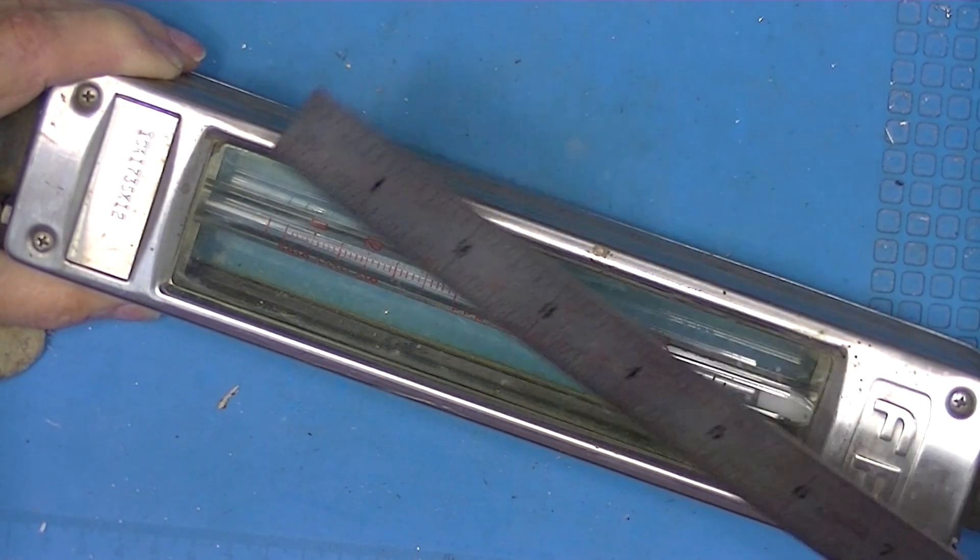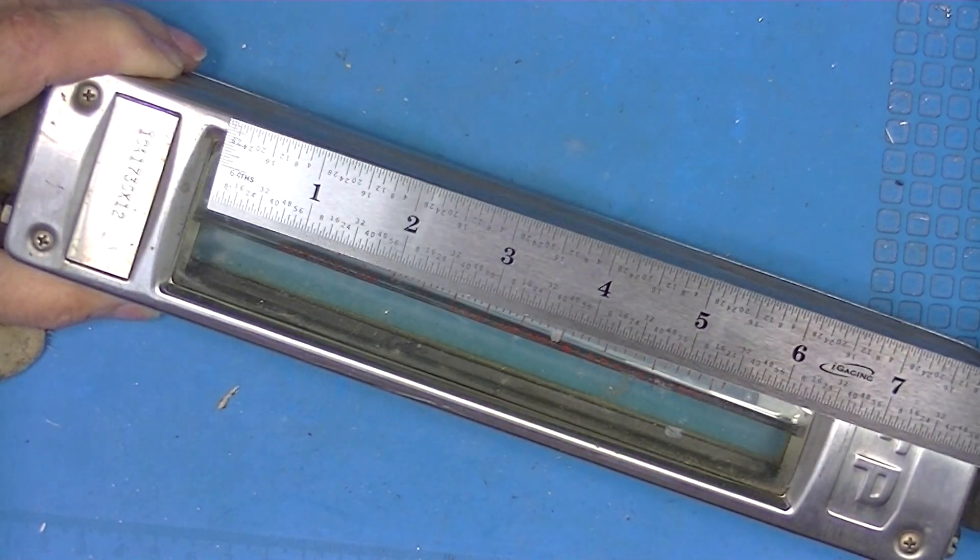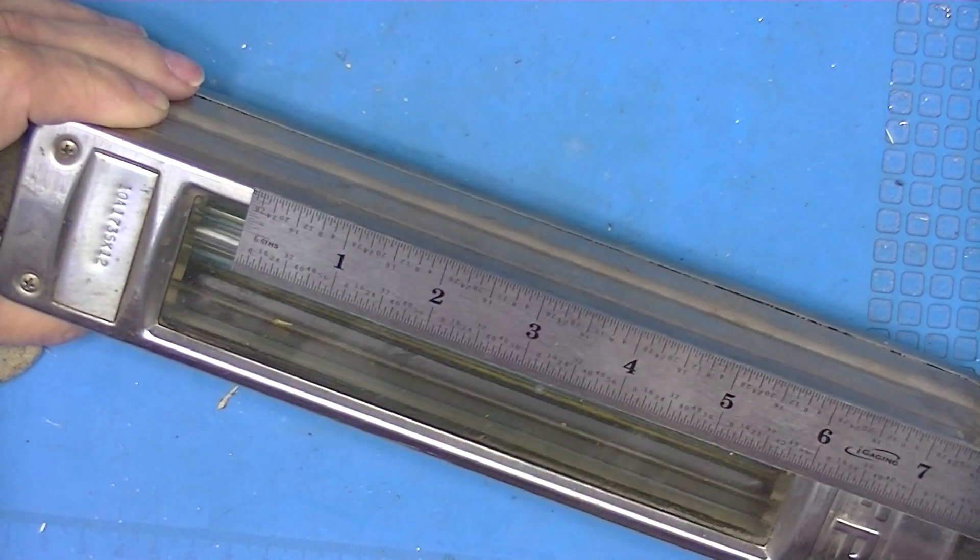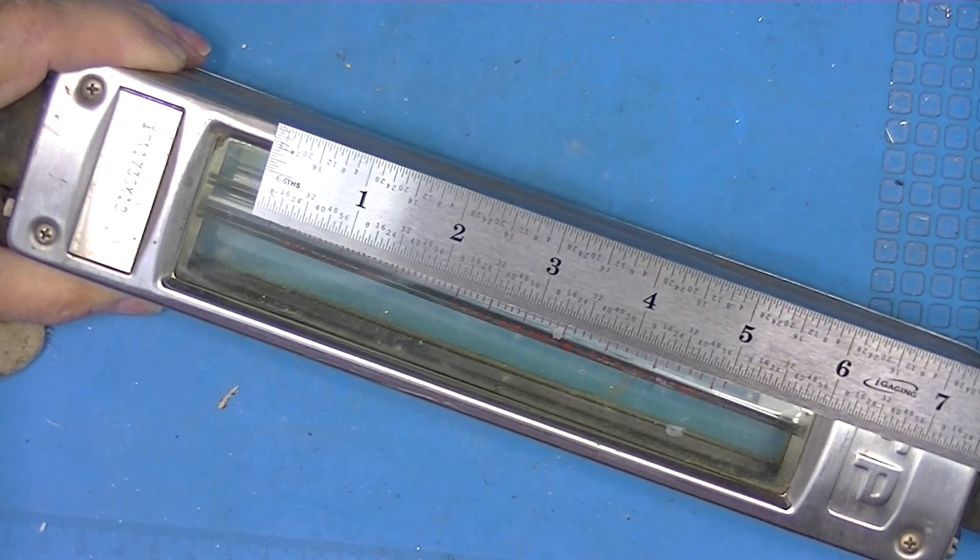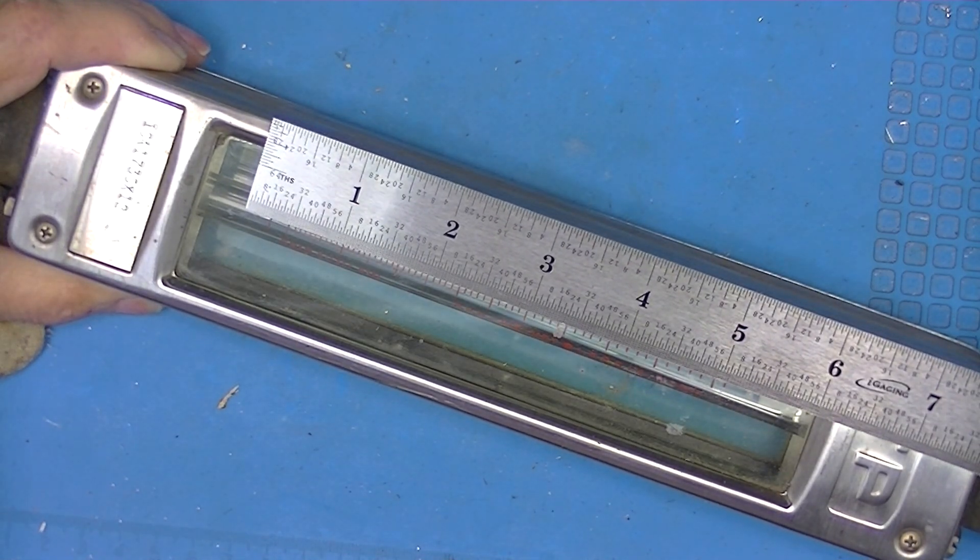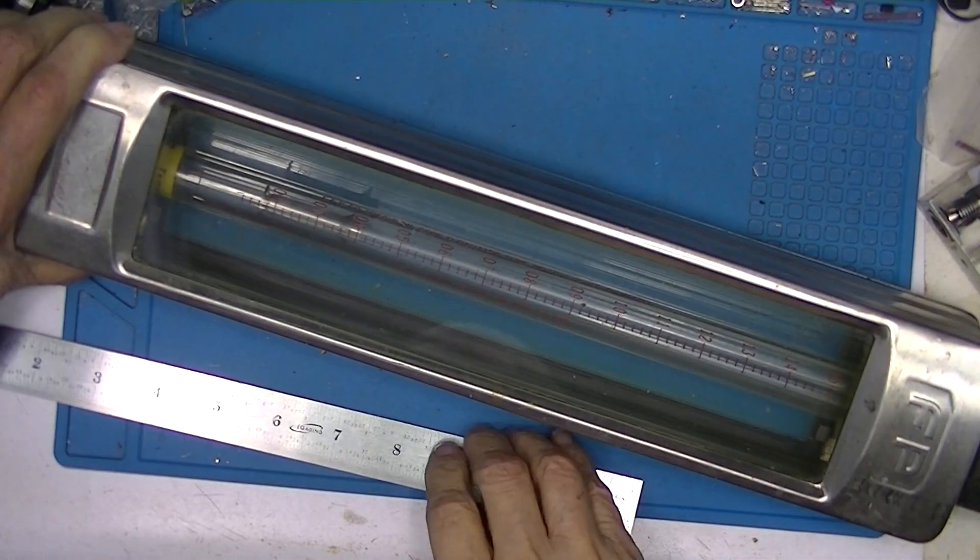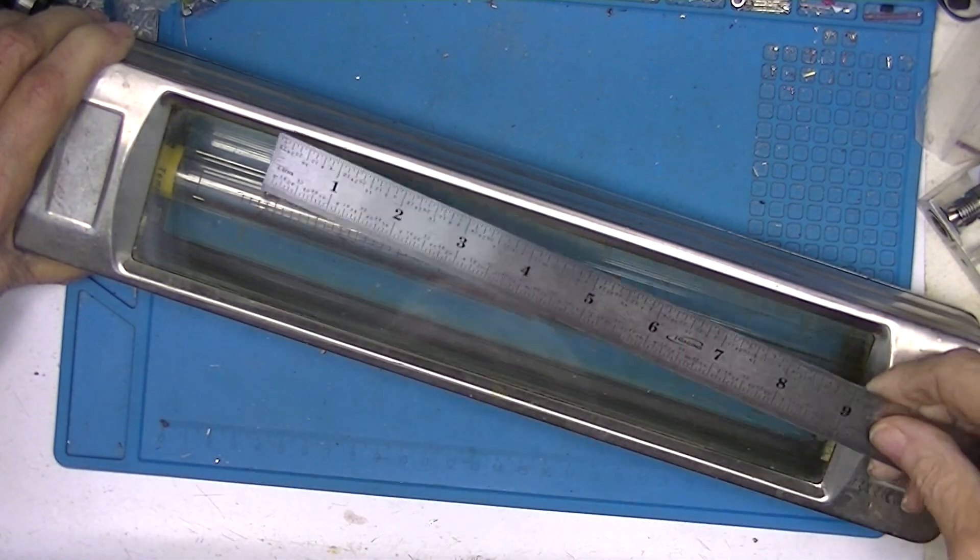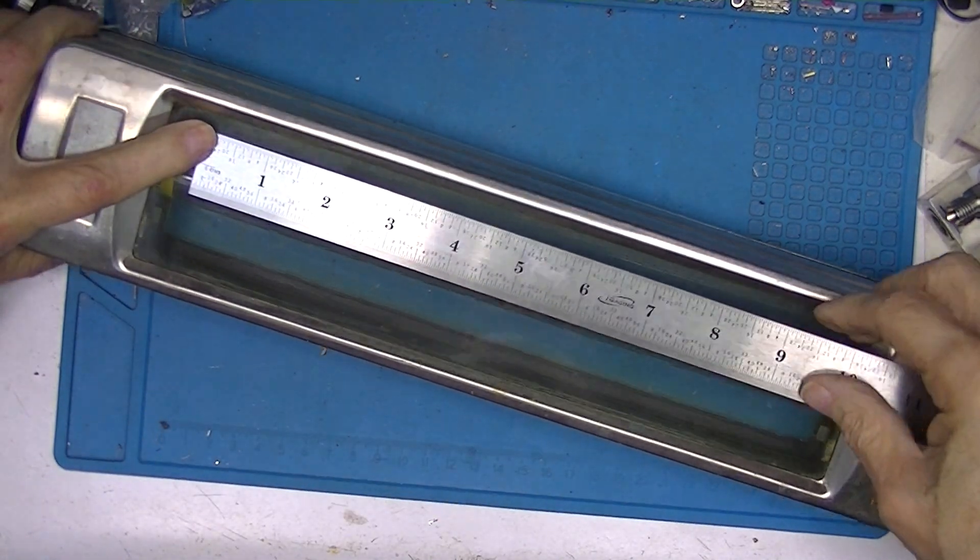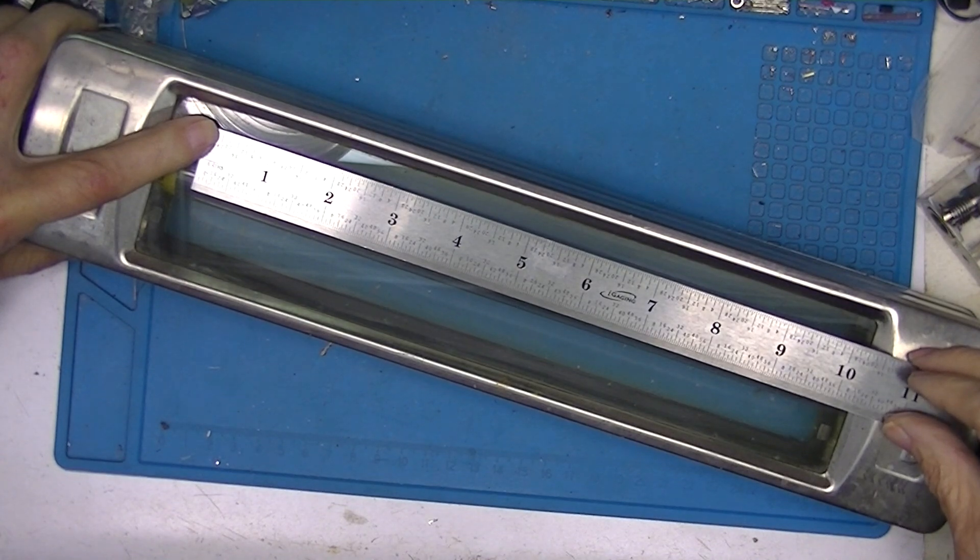The scale length on this flow meter is probably five inches, five and a half inches. This is a considerably larger Fisher and Porter. It has a scale length of probably ten inches.